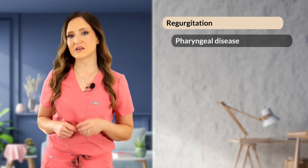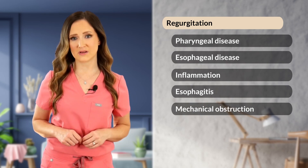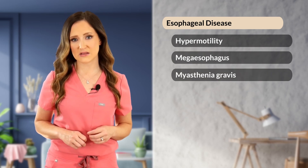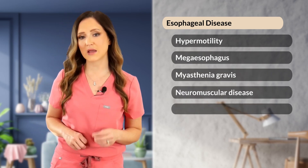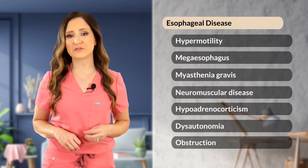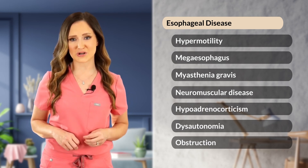Once we have clarified whether a patient is having vomiting or regurgitation, we can proceed with isolating differentials and creating a diagnostic plan. Regurgitation differentials include pharyngeal disease, esophageal disease, esophagitis, and mechanical obstruction. Esophageal diseases include hypomotility, megaesophagus, myasthenia gravis, generalized neuromuscular disease, hypoadrenocorticism, and dysautonomia. Mechanical obstruction may be due to esophageal foreign body, stricture, GI stasis, vascular ring anomalies, or hiatal hernias.